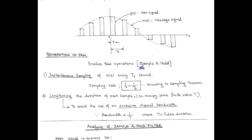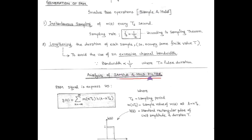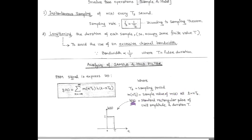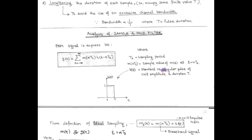In the analysis of PAM, we require a sample and hold filter. Mathematically, the PAM signal is expressed as G(t) equals summation from N equals minus infinity to infinity of M(NT_S) into H(t minus NT_S), where T_S is the sampling period, M(NT_S) is the sampled version of the modulating signal obtained at t equals NT_S, and H(t) is a standard rectangular pulse of unit amplitude and duration capital T.